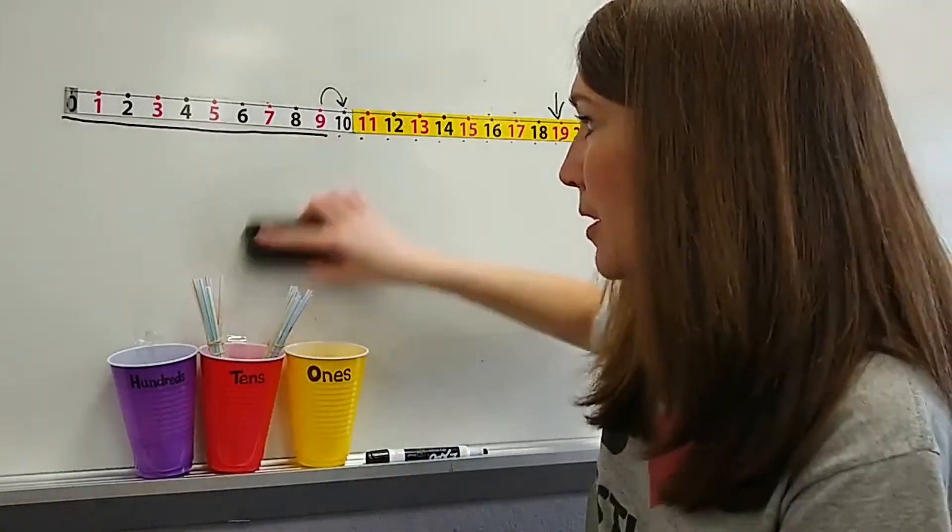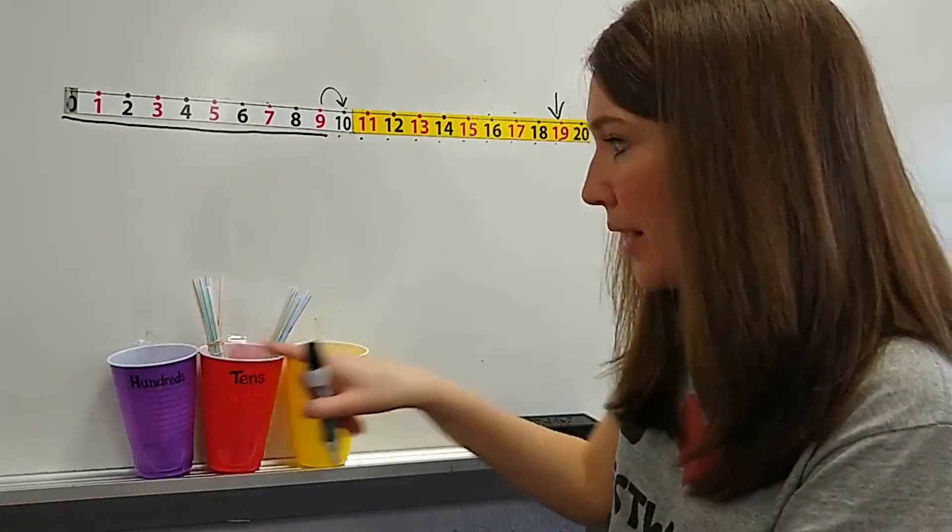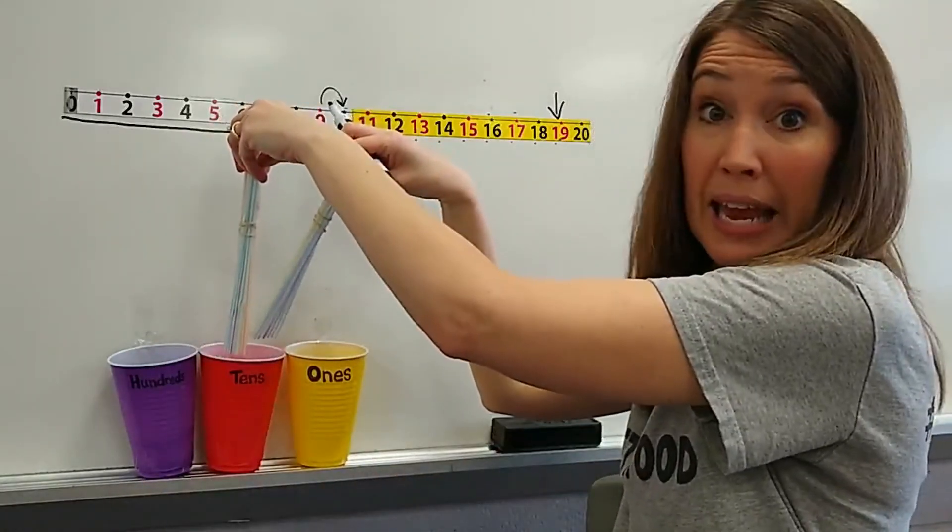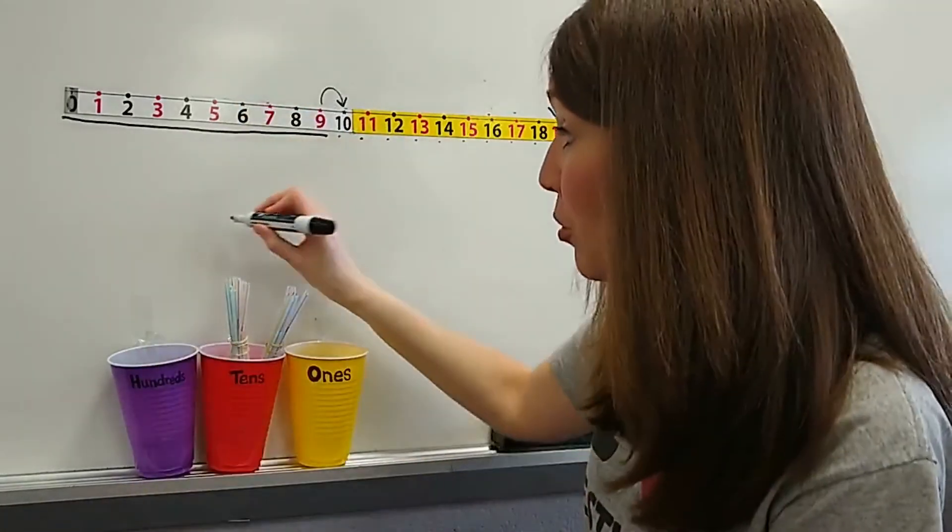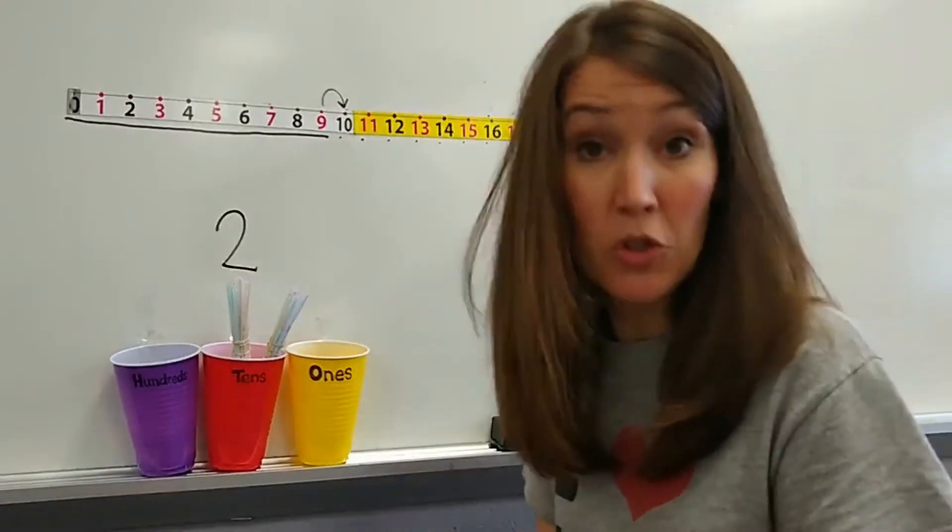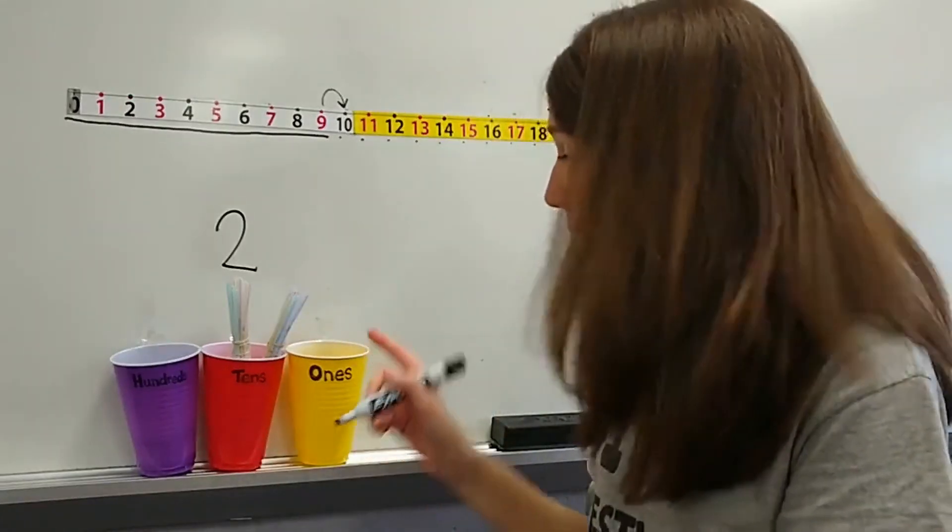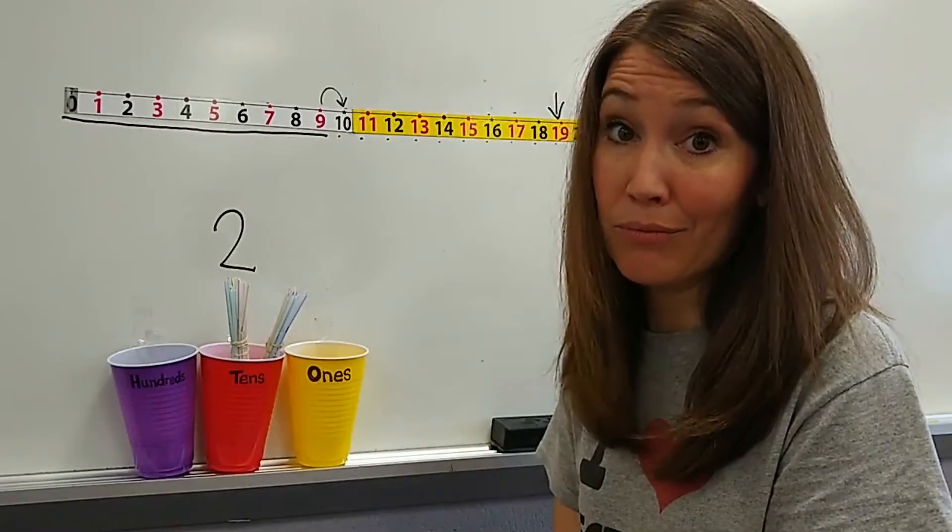But let's change our number to match what we have. Right here I have how many tens? I have two groups of 10, don't I? Two groups of 10 in the tens cup. How many ones do I have? All by themselves. Zero.